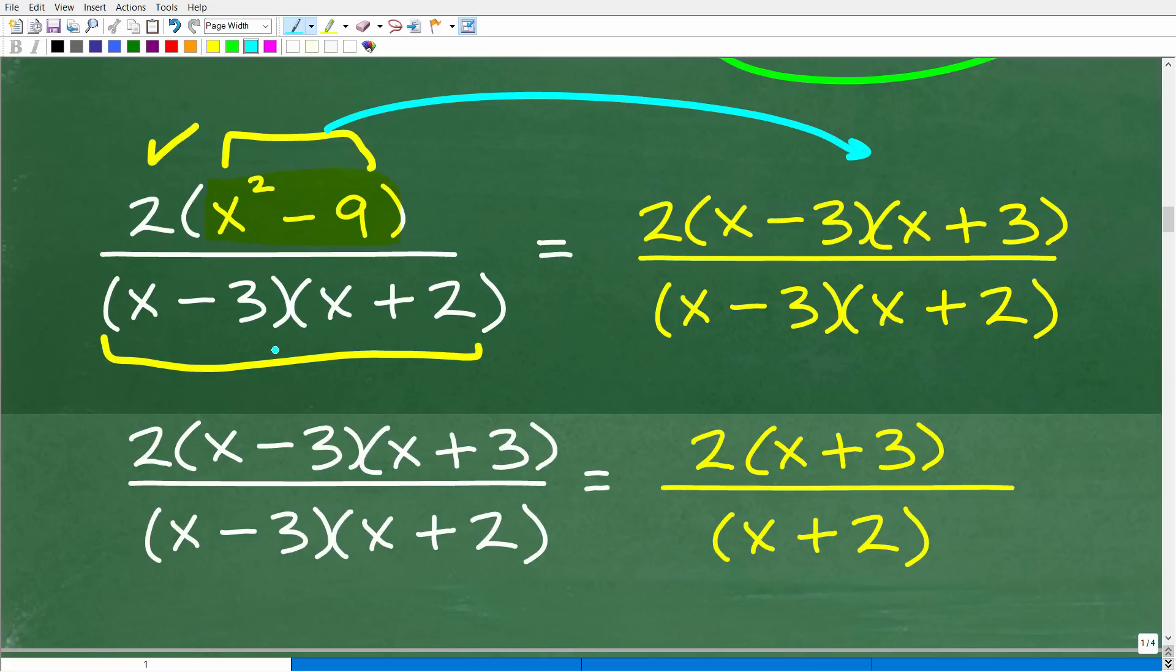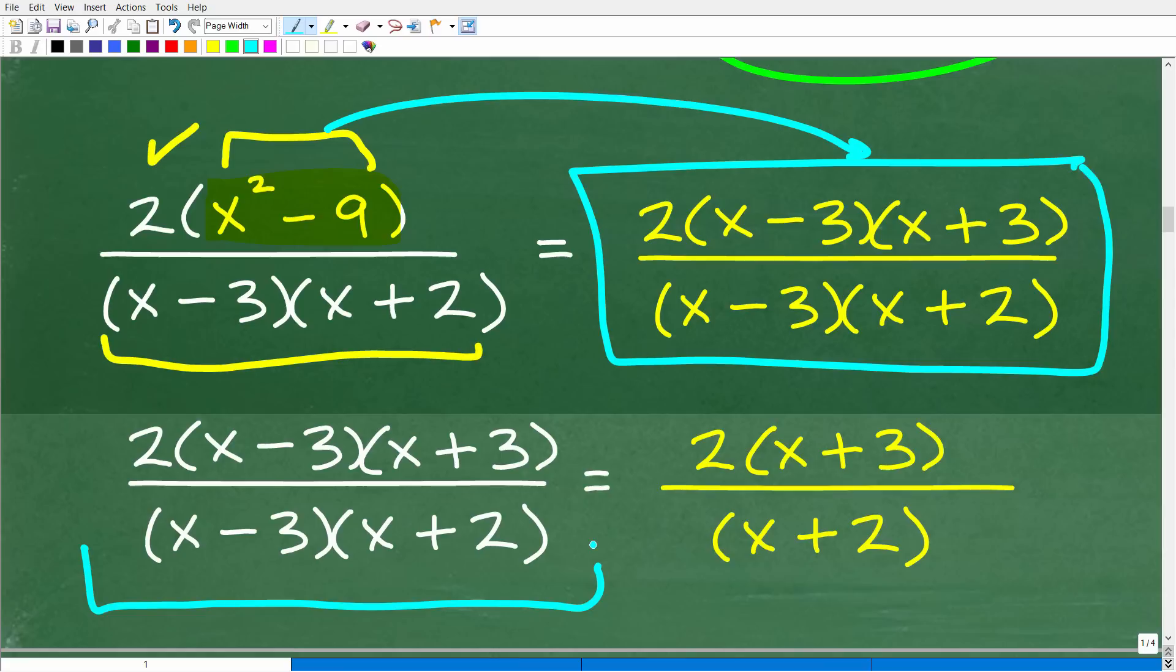So x squared minus 9 we can factor as x minus 3 times x plus 3. Now we're going to write that over our denominator, which is x minus 3 times x plus 2. So here is that expression fully factored. All right, so now let's take a look at it. And once we've factored out completely the numerator and denominator, what we're looking for here is opportunities to cross-cancel any like factors.